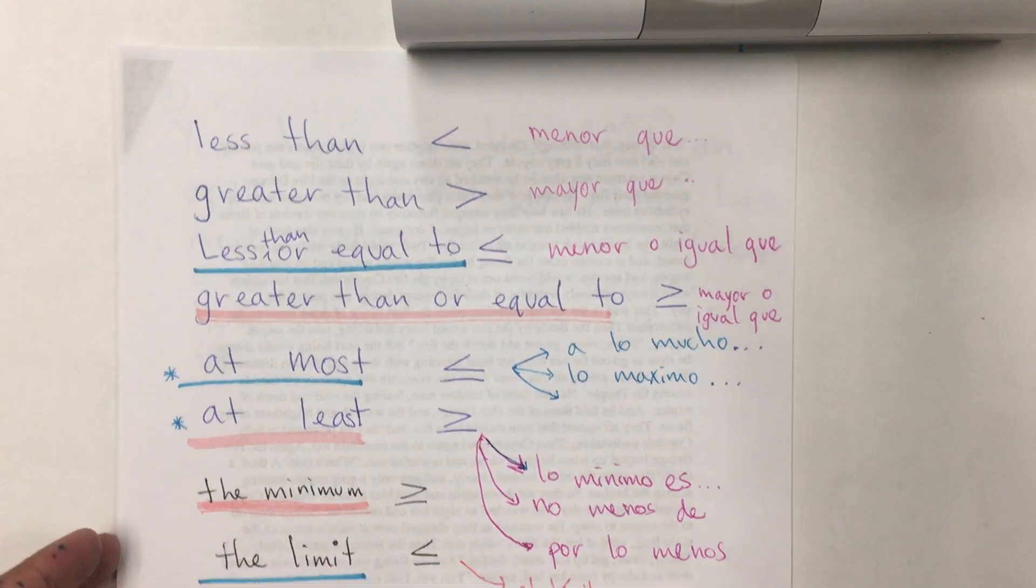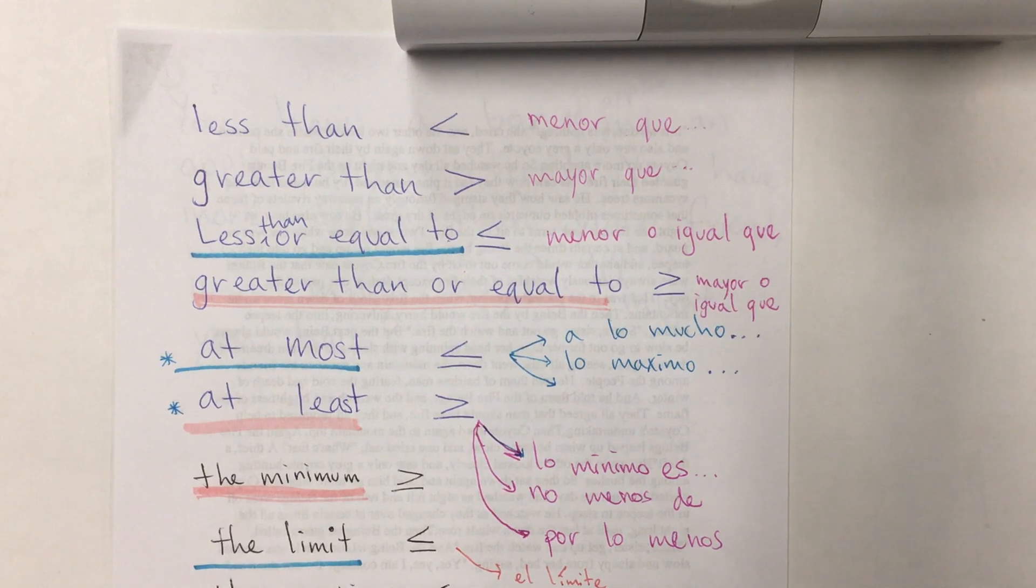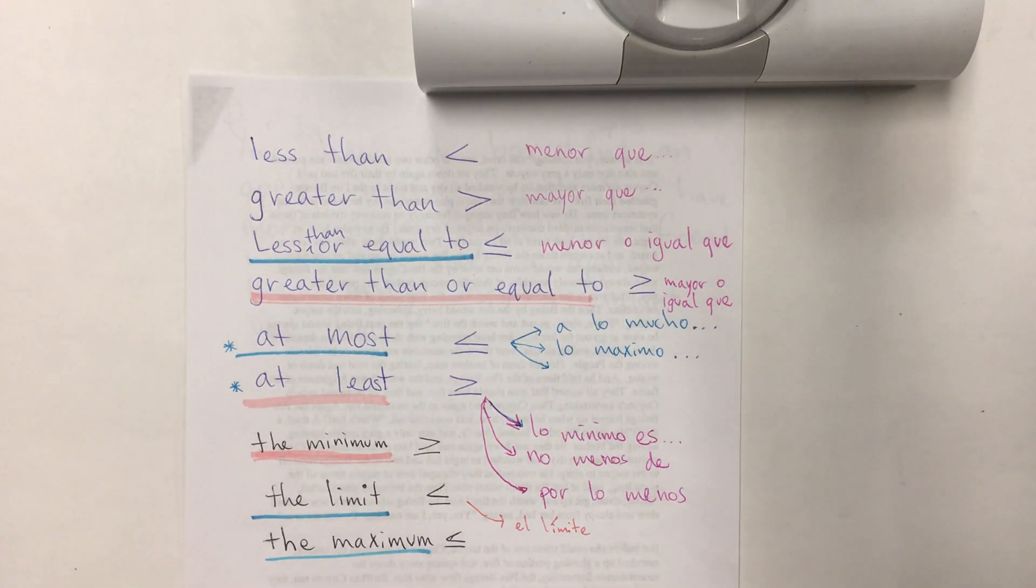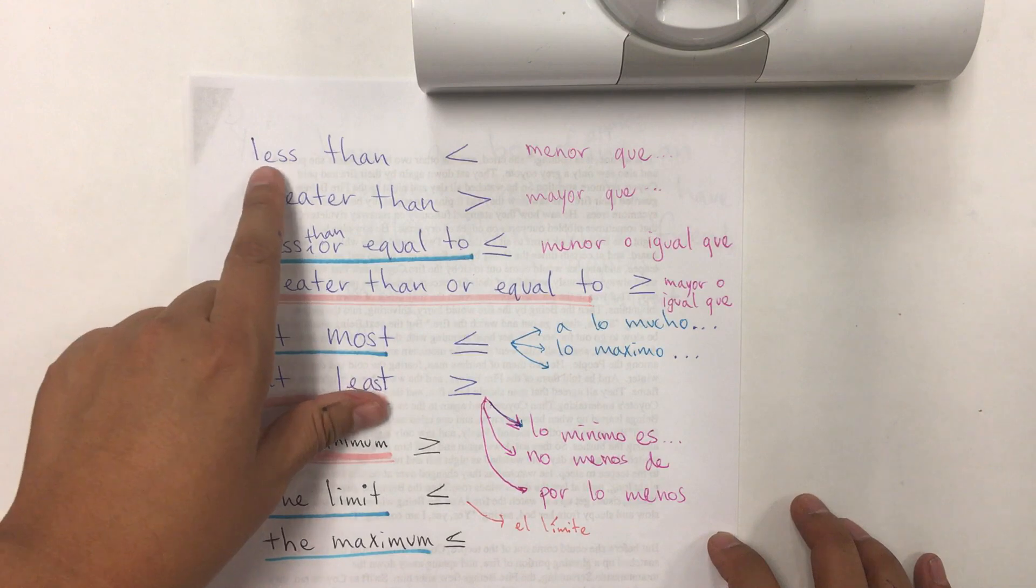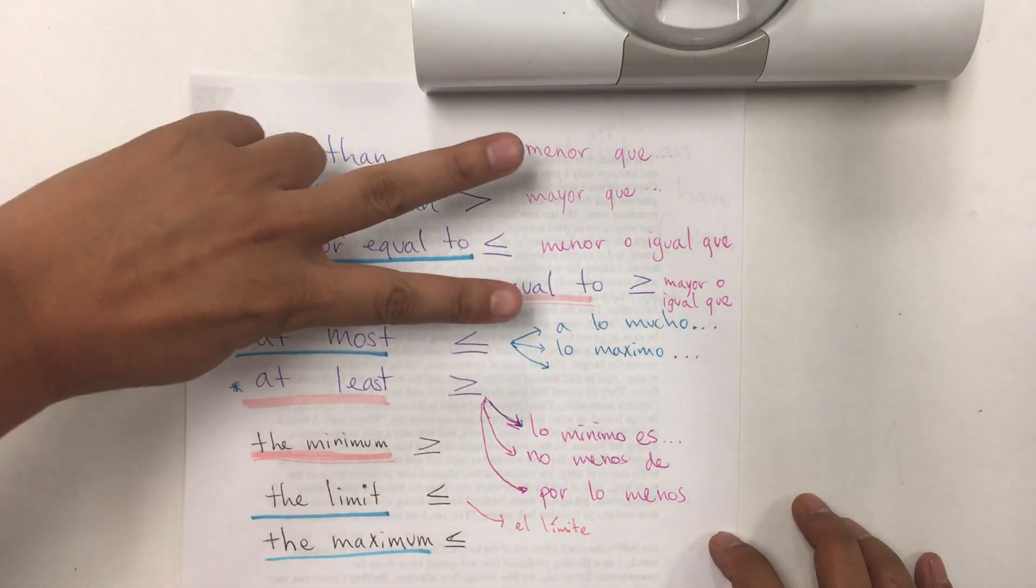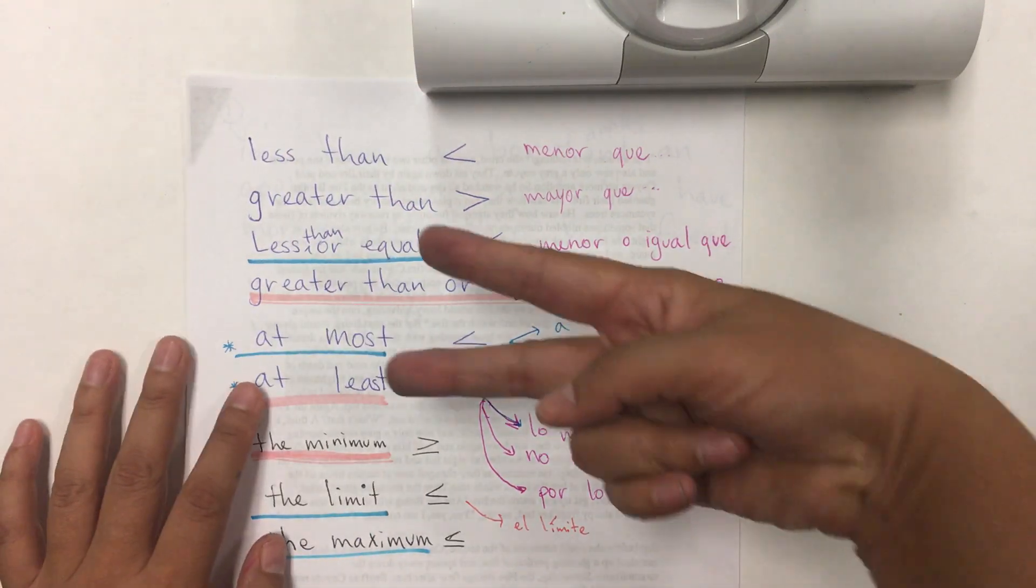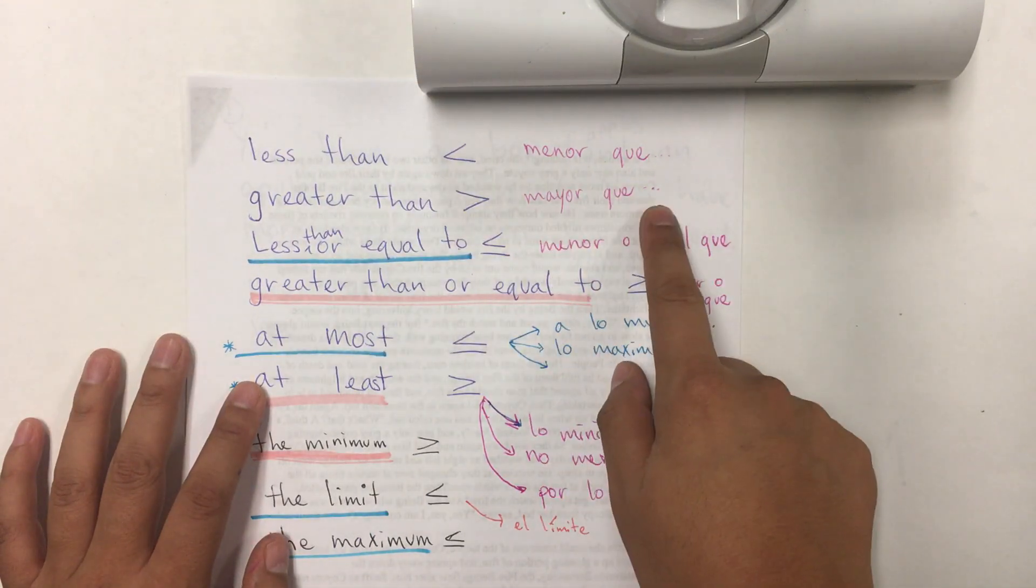Before we start, I want you to have these notes. Less than is in Spanish menor que, and the symbol is like this. Greater than, it opens this way, and it's mayor que.